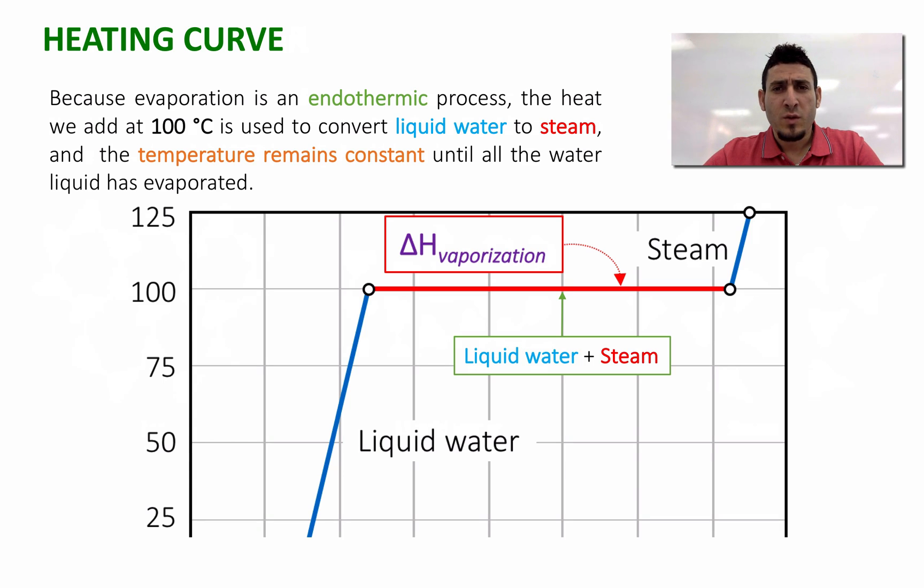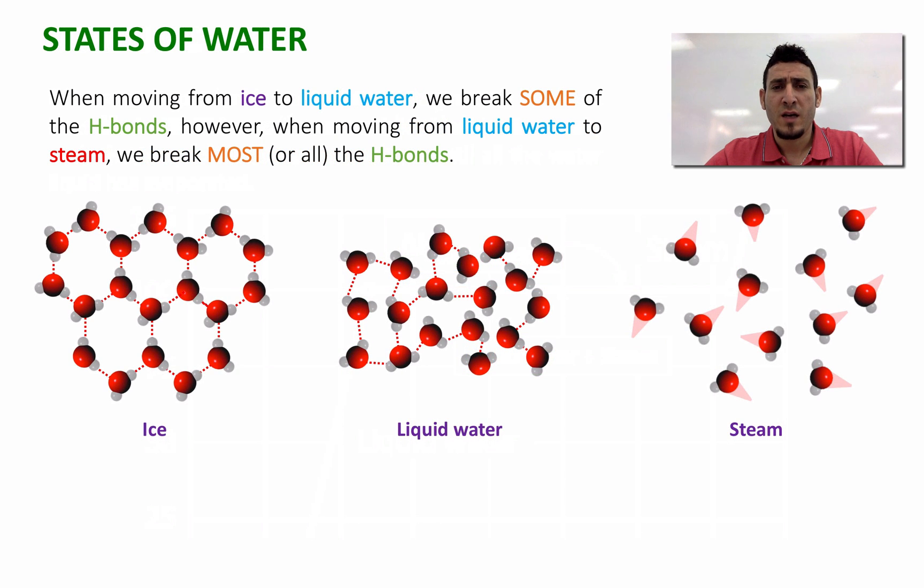Another important question we can ask is why the enthalpy of vaporization is much greater than the enthalpy of fusion. The answer is because when we're moving from ice to liquid water, we break some of the H bonding between the water molecules, and this doesn't require a lot of energy. However, when moving from liquid water to steam, we break most or all the H bonding between the water molecules, and this will require a lot of energy. And thus, delta H vaporization is much greater than delta H fusion.